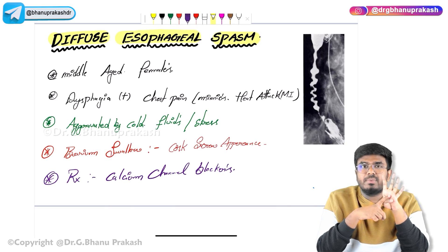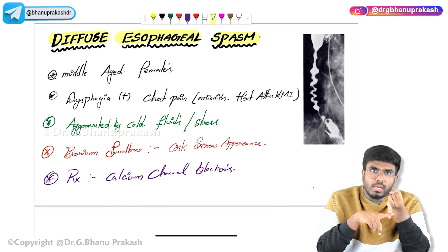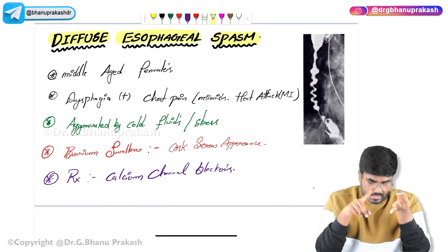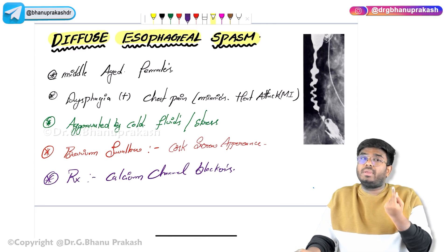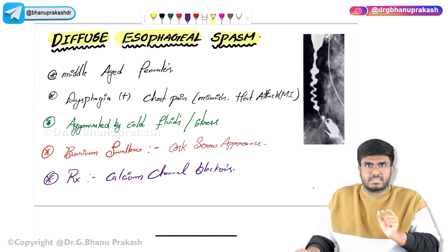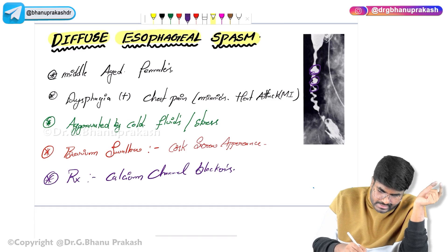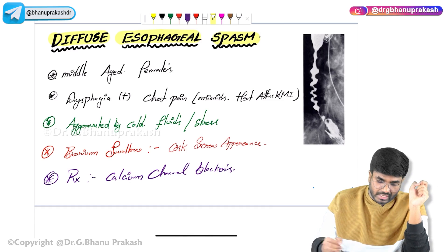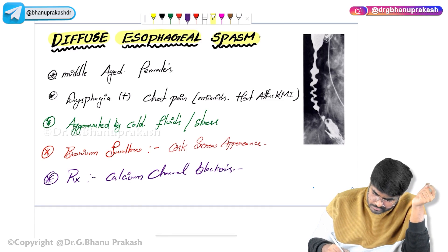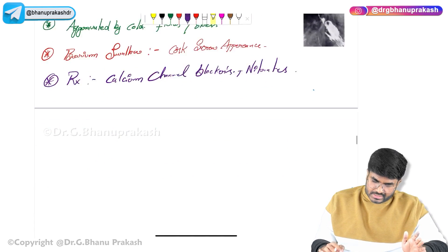To summarize DES: it is seen in middle-aged females; spasms are aggravated by emotional stress or cold fluids. On barium swallow, it shows corkscrew appearance, also called rosary bead appearance — because the esophagus looks like beads. Treatment is calcium channel blockers, and nitrates can also be used. With this, the DES topic is completed.